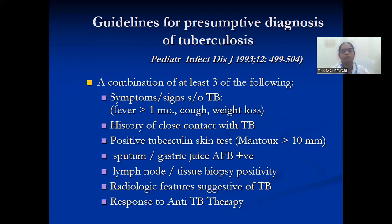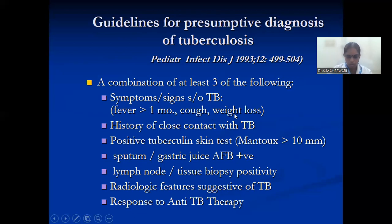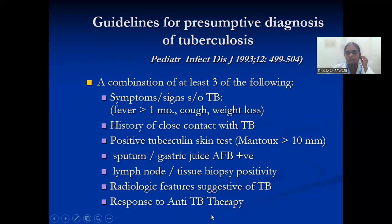Presumptive diagnosis of tuberculosis: at least three of the following should be present — symptoms and signs of tuberculosis like fever, cough, and weight loss; close contact with tuberculosis; positive tuberculin skin test; gastric juice positive for AFB; lymph node or tissue biopsy positivity; radiological features suggestive of TB; and response to anti-TB therapy.